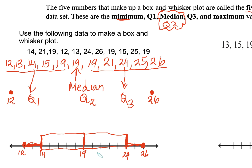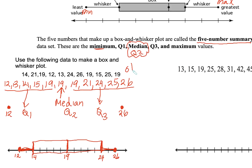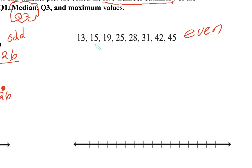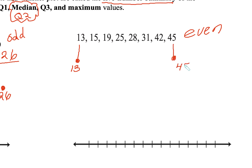So here, this was an odd data set — pretty simple. Let's try it with an even data set. To save some time, I already have it in order from smallest to largest. We have our minimum value, which is 13, and our maximum value, which is 45.